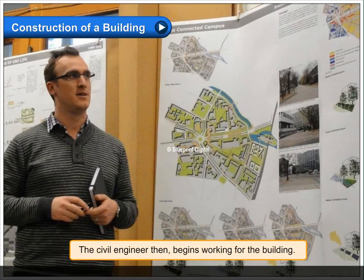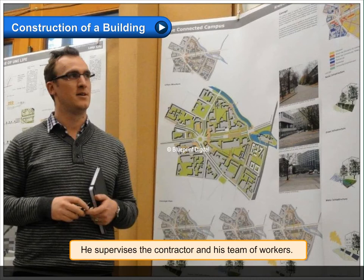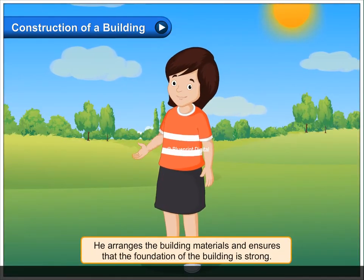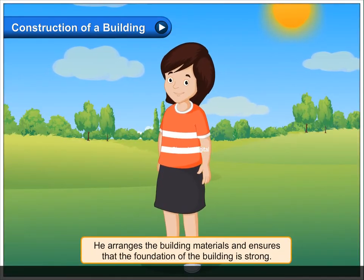The civil engineer then begins working for the building. He supervises the contractor and his team of workers. He arranges the building materials and ensures that the foundation of the building is strong.